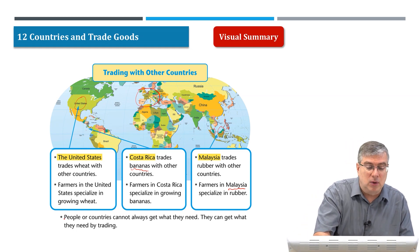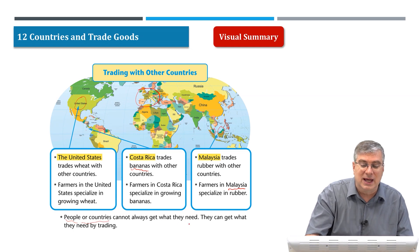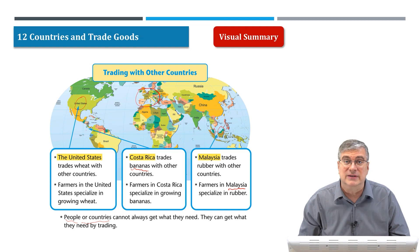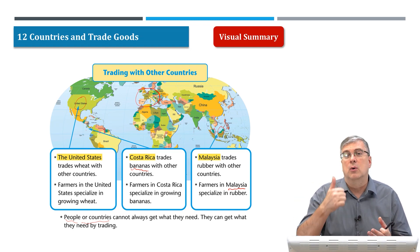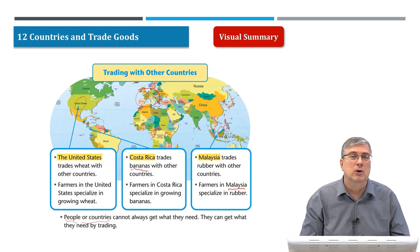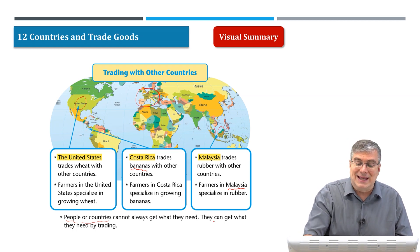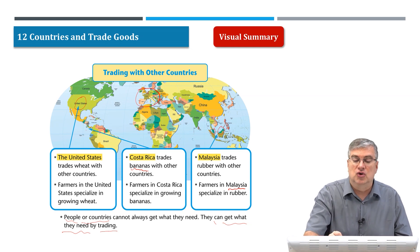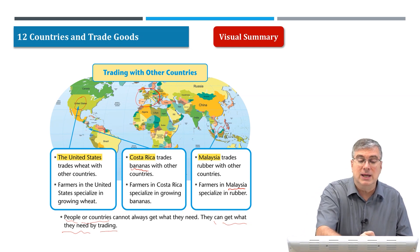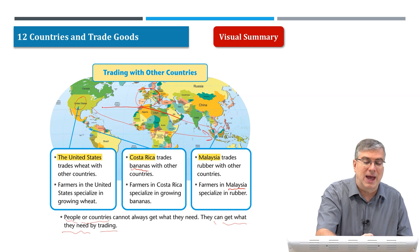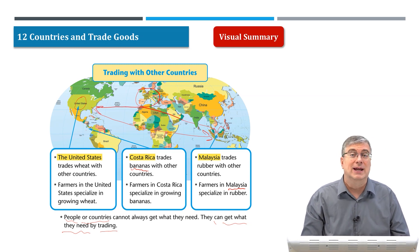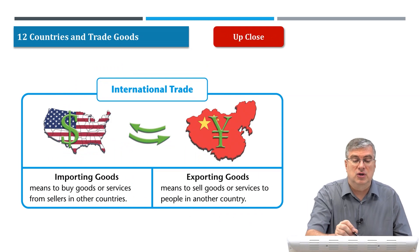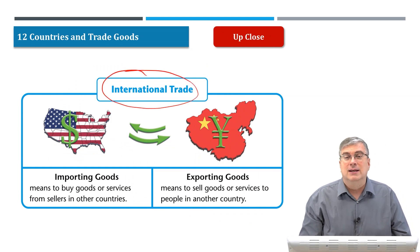As we can see, countries cannot always get what they need because they don't live in the right place — their environment may not support growing wheat, bananas, or rubber. So they can get what they want by trading. If America needs rubber, they will trade with Malaysia. America has wheat and Malaysia doesn't grow much wheat, so wheat goes to Malaysia and rubber comes back to the United States. That's trade — international trade. Two very important trading partners in the world today are America and China.